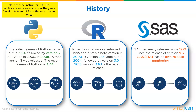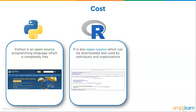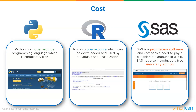Looking at cost: Python is an open source programming language, completely free — you can download it now at no charge. R is also open source, free for individuals and organizations to download and use. SAS, on the other hand, is proprietary software, and companies need to pay a considerable amount to use it. SAS has also introduced a free university edition, a limited version available for studies and coursework.